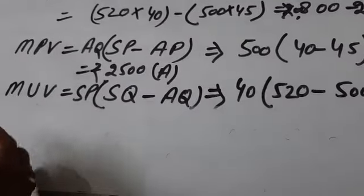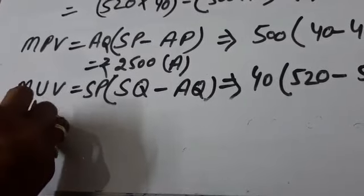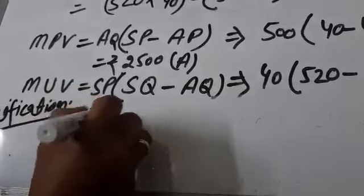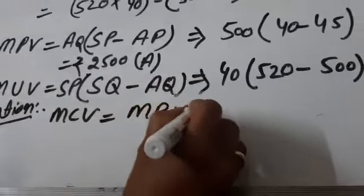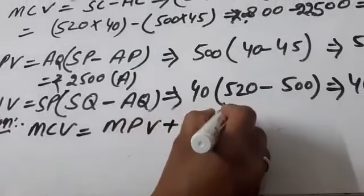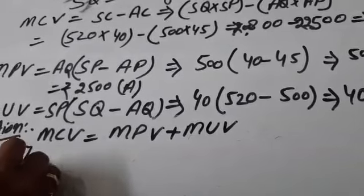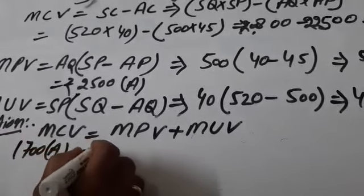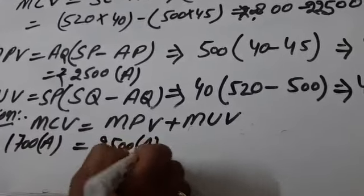We will verify it. Verification sum: MCV equal to MPV plus MUV. We will put the values. MCV is 1700 in adverse form, MPV 2500 in adverse form, which means negative form.